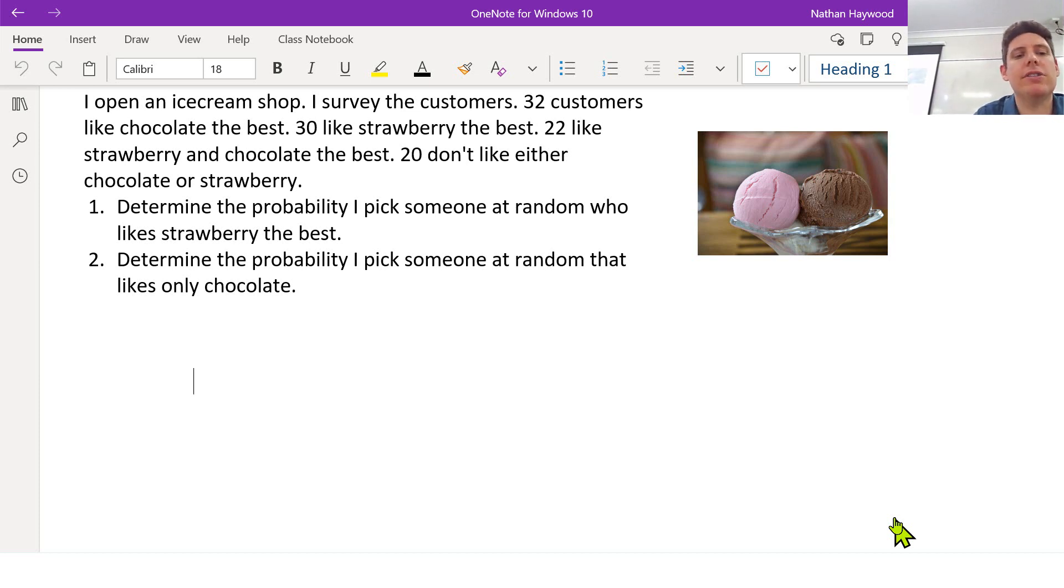probability that that person likes strawberry the best. So a great way to figure this out is to draw a Venn diagram.